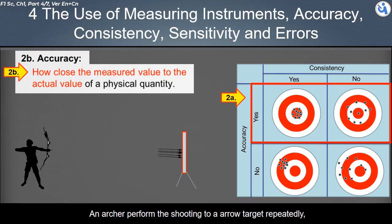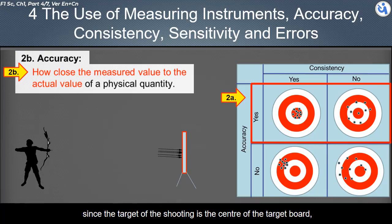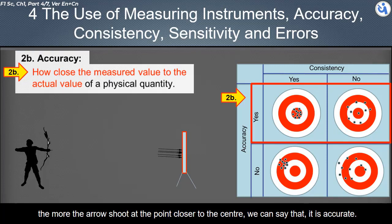Here is an example. An archer perform the shooting to a arrow target repeatedly. Since the target of the shooting is the center of the target board, the more the arrow shoot at the point closer to the center, we can say that it is accurate.